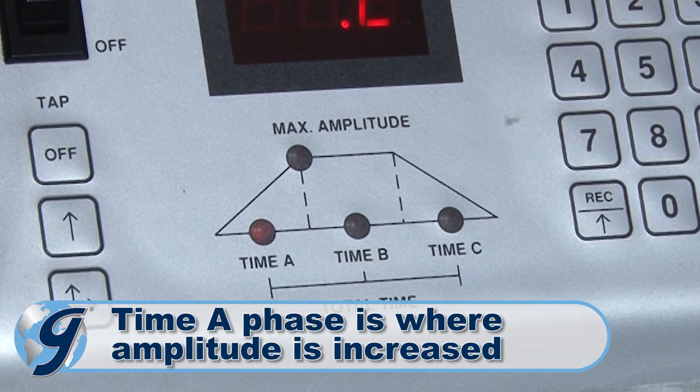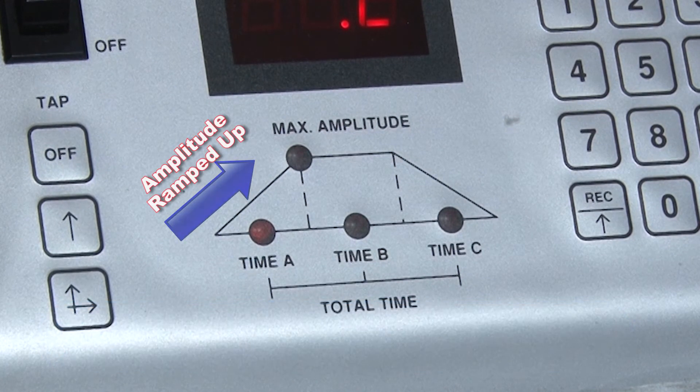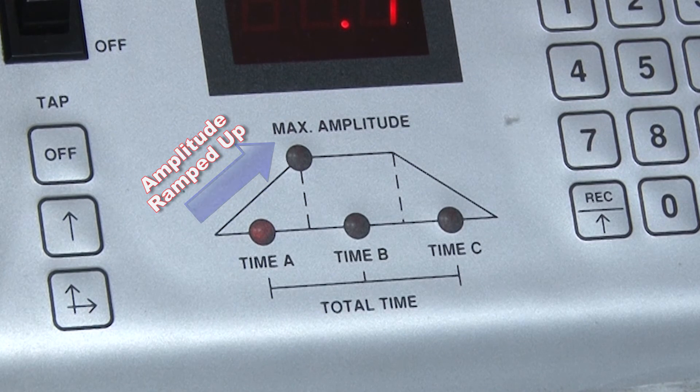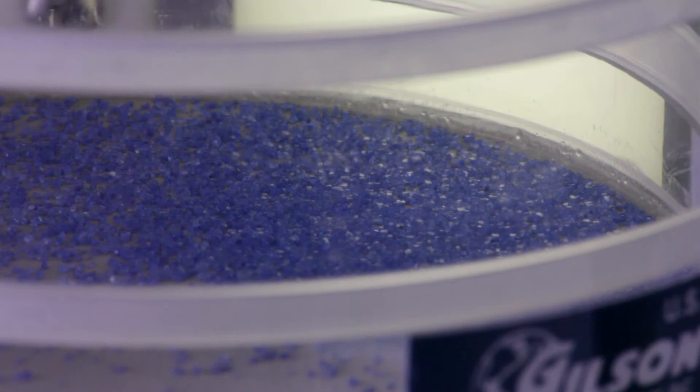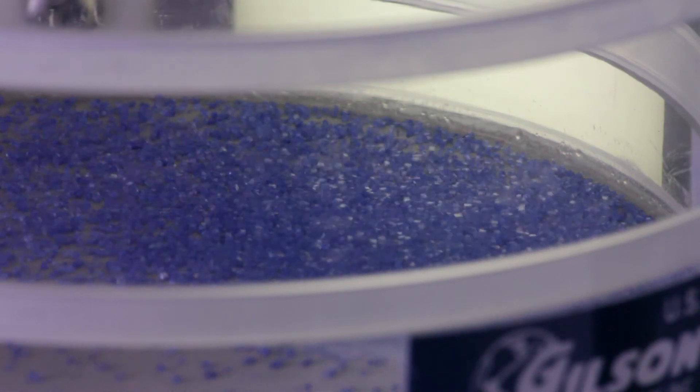The Time A phase is the beginning of the test sequence where amplitude is increased from zero to maximum program setting. This gradual increase of amplitude allows test samples to gently separate before more energetic action occurs which may cause test particles to clump.